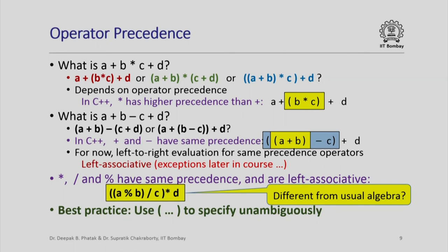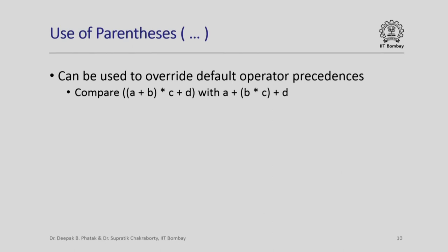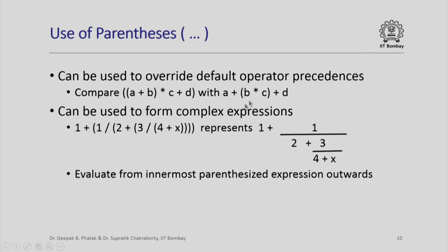The best practice is to use parentheses to specify the exact order in which you want operators to be evaluated unambiguously. Parentheses can override default operator precedence. For example, for A plus B star C plus D, using parentheses I can specify: first add A and B, then multiply by C, then add D. Parentheses can also be used to form complex nested expressions — we evaluate from the innermost parenthesized expression outward. For example: first evaluate 4 plus X, then 3 divided by that, then 2 plus that result, then 1 divided by that, and finally add 1.